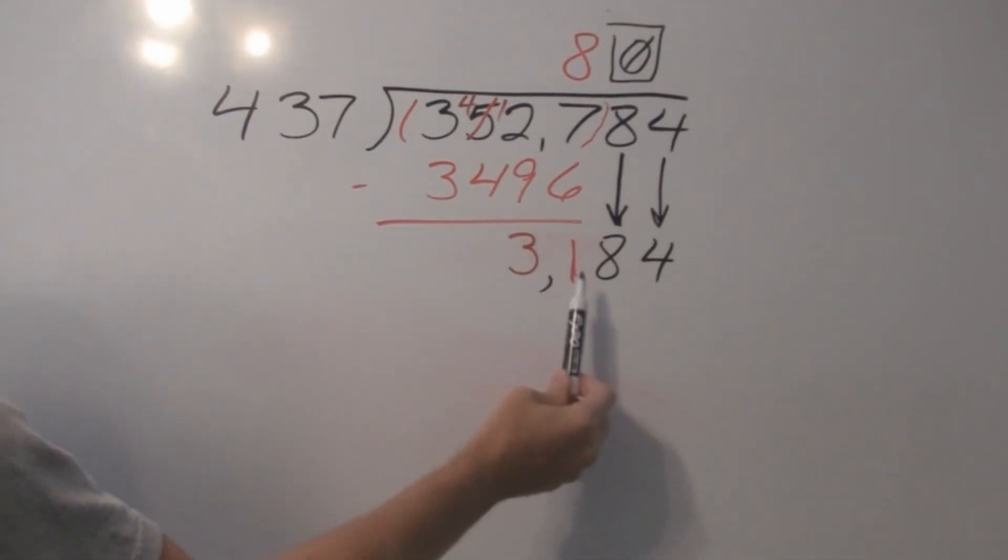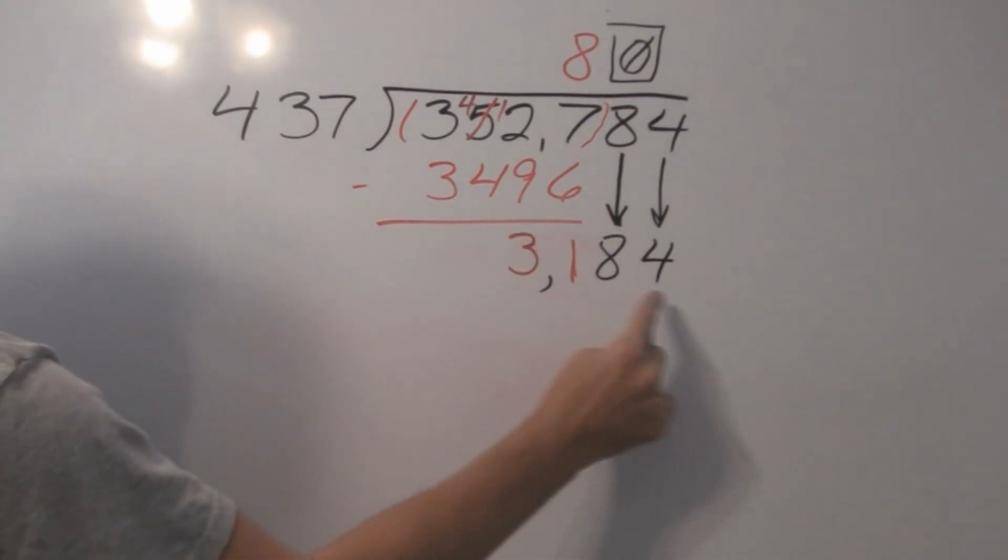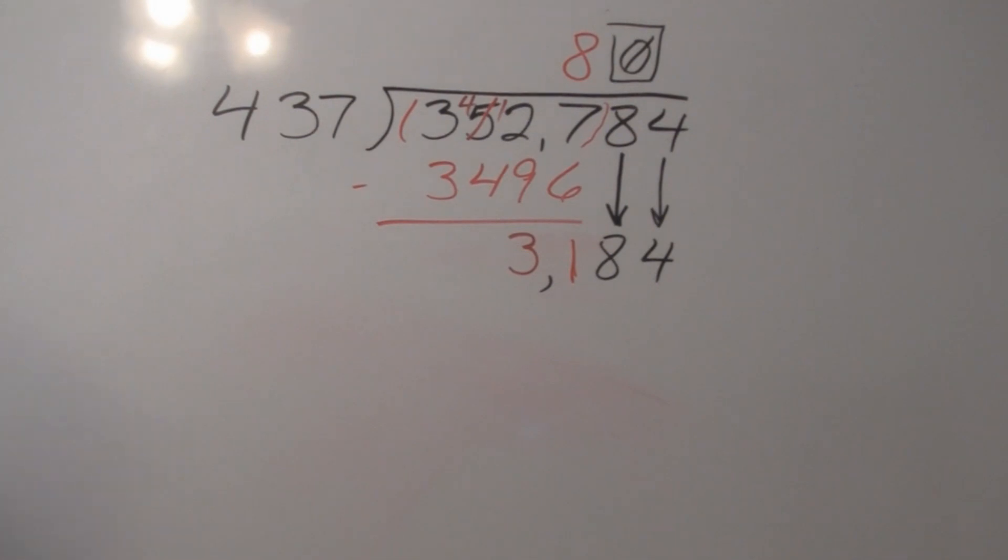So now we have 3184. Will 437 go into 3184? Yes. So now we're going to have to do trial and error again. Again, we already know that 8 times 437 was 3496. That's going to be too high to subtract, isn't it? So let's try to go down one. Let's, in our trial and error process, multiply 437 times 7 this time. What's 7 times 7? 49. Carry our 4. What's 3 times 7? 21. Plus 4? 25. Carry our 2. What's 4 times 7? 28. Plus 2? 30.